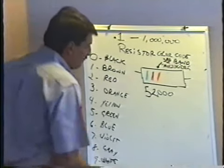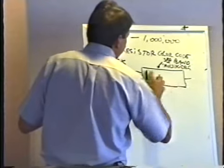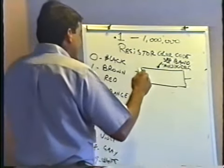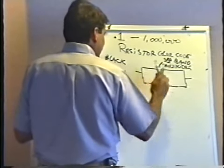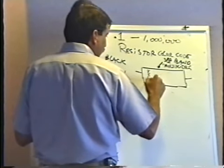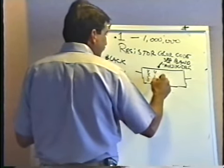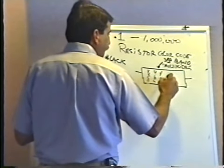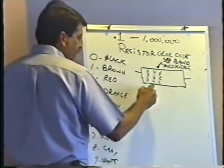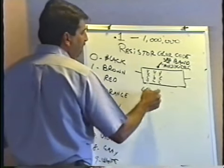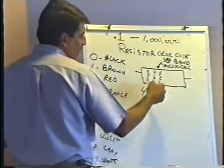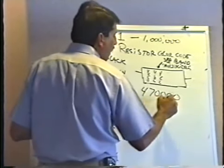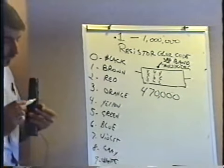Red, violet, green: red is 2, violet is 7, green means five zeros — 2,700,000 ohms. It's actually very simple once you've done it a few times. Now what about brown, black, black? Brown is one, black is zero, and the third band — also black — means put no zeros after the first two. This is a 10-ohm resistor.